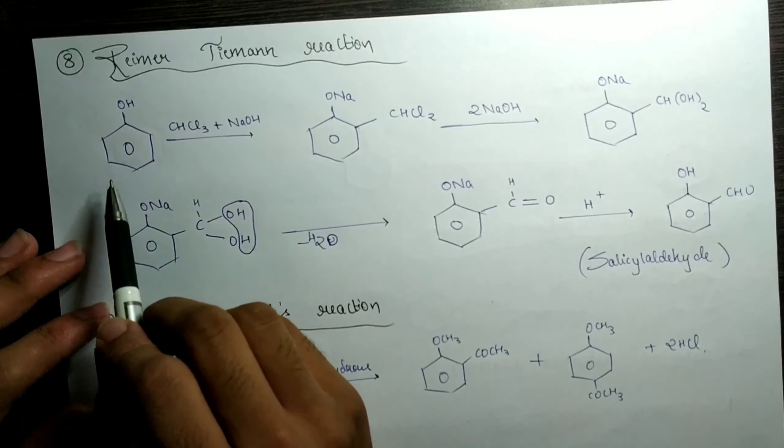We start with the 14th reaction: the Hell-Volhard-Zelinsky (HVZ) reaction. This is not so important — it's actually a straightforward reaction. All you have to remember is that alpha hydrogens are a must in this reaction. You take R-CH₂-COOH, add Cl₂ in the presence of the reagents, and all you have to do is take one Cl out and put it at the alpha carbon — it becomes CHCl — and HCl is formed. That's all there is to it.